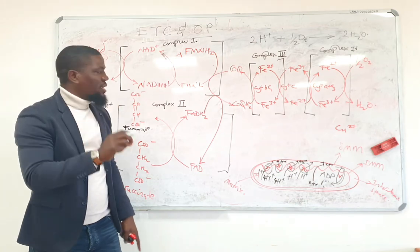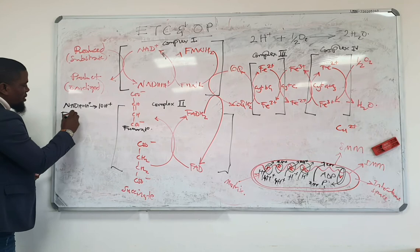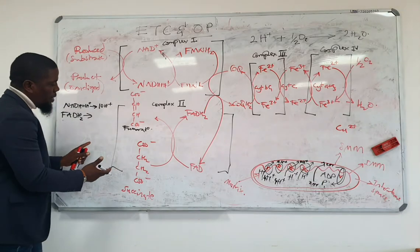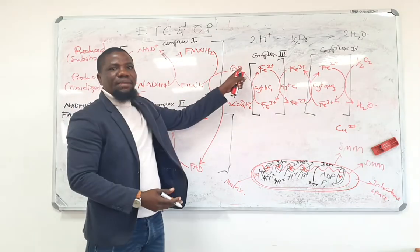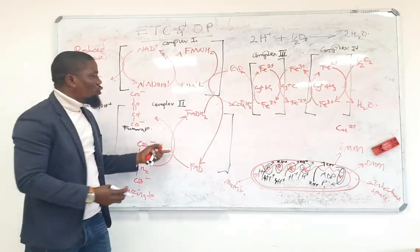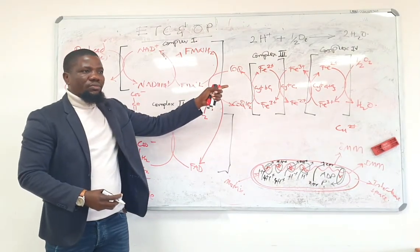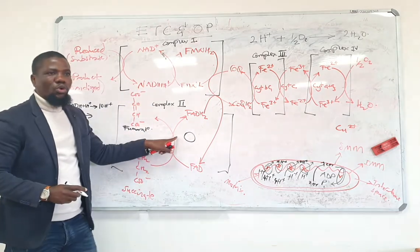On the other hand, if it is an FAD-linked dehydrogenase, what is going to happen is that as hydrogens are moving from this reduced equivalence onto coenzyme Q, the energy which is generated is not enough to force protons out of the matrix. The result is that zero would move through complex two.